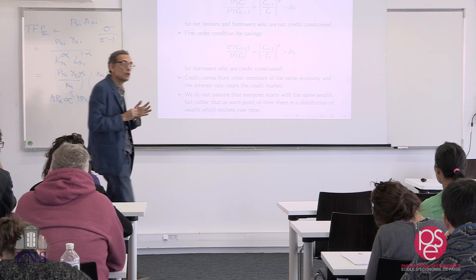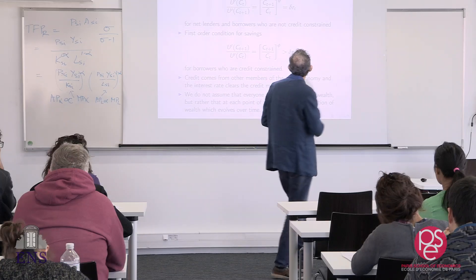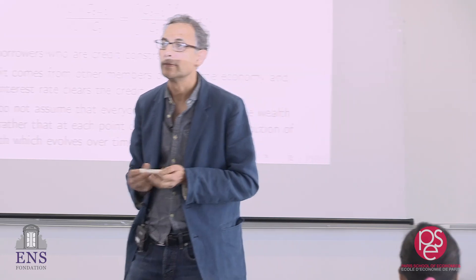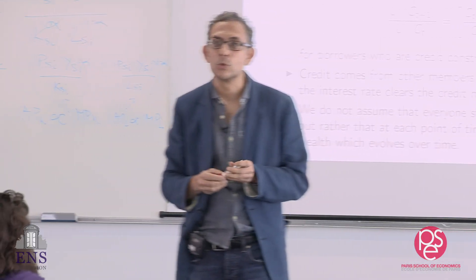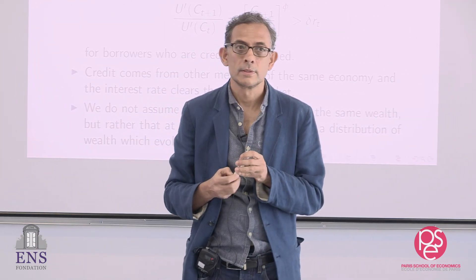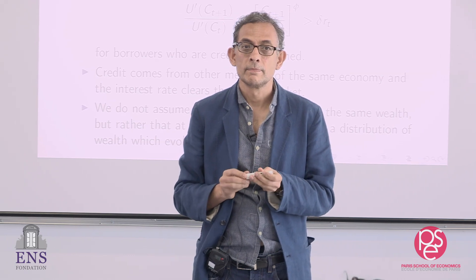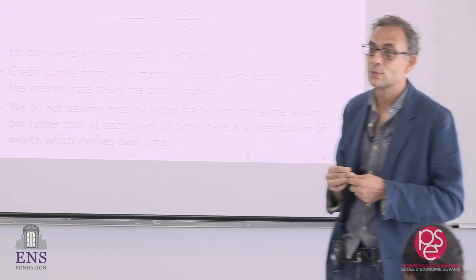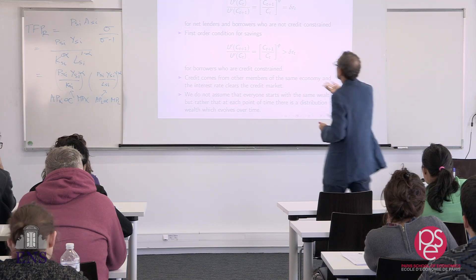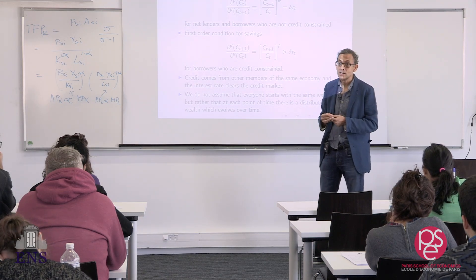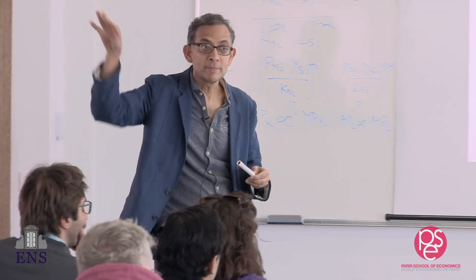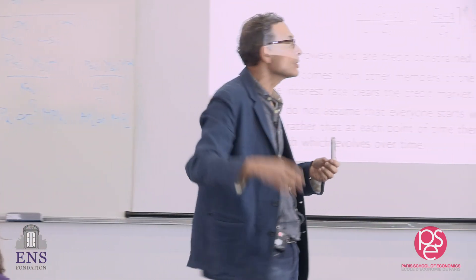With diminishing returns, this equation holds for the rich and not for the poor. What does that imply for the growth rate of consumption? The poor will have higher consumption growth, because the Euler equation says exactly that. So the poor will get relatively richer over time and will converge towards the rich.